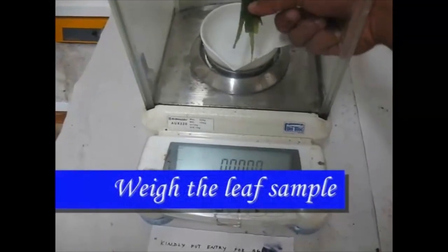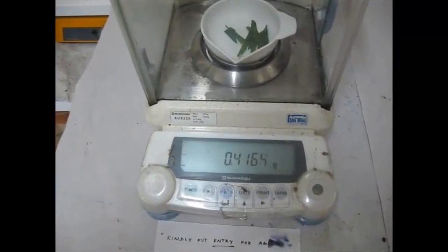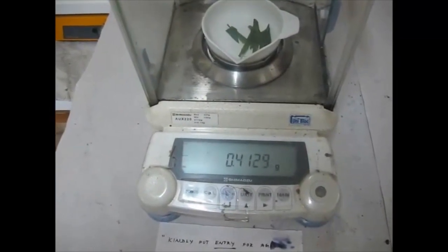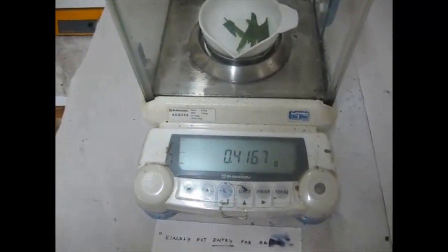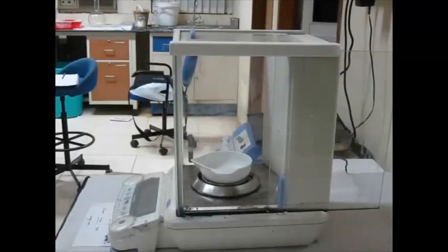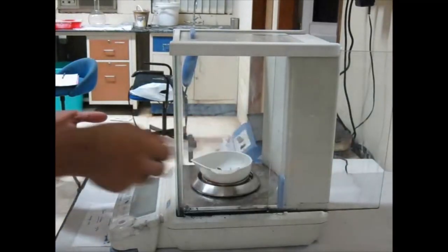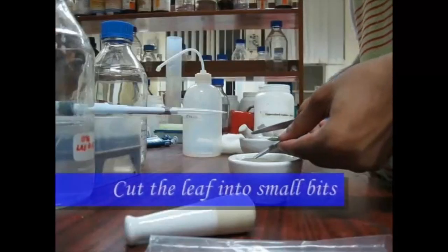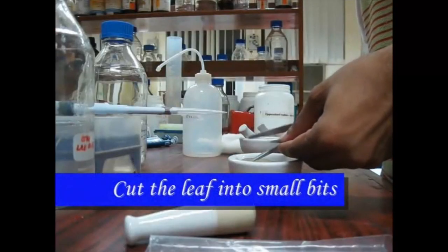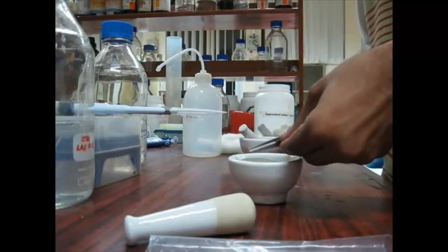Take the leaf samples from which you would like to isolate the genomic DNA. Now weigh 0.5 gram of leaf sample as you see in the weighing machine. Cut the whole leaf samples into the pestle and mortar as it would be convenient to grind.